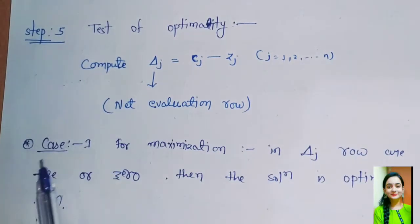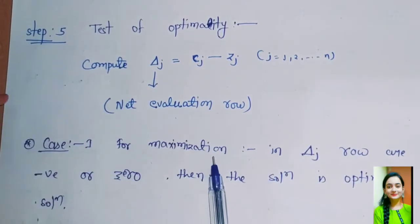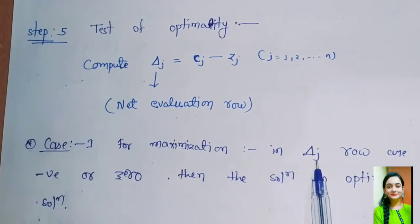Case 1: For the maximization case. In this case, if all delta j values are negative or zero, then the solution is optimal. If not, then we will improve the solution.